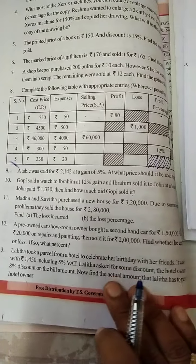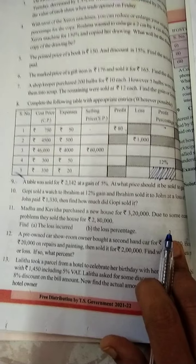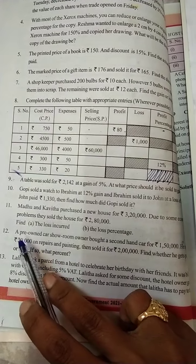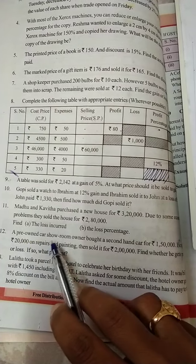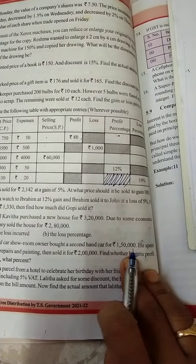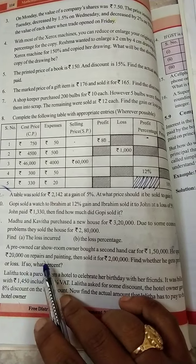Hi, hello, welcome to Manskuru channel. In this video I am going to explain Exercise 5.2, 12th question. Given that a pre-owned car showroom owner bought a second-hand car for 1 lakh 50,000, he spent 20,000 on repairs and painting.